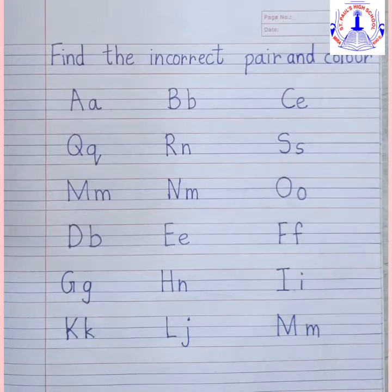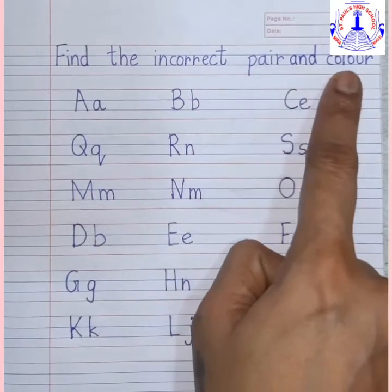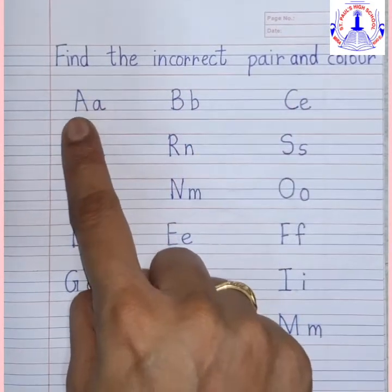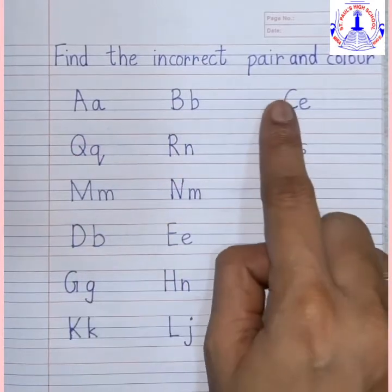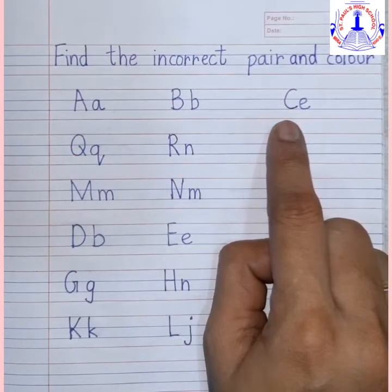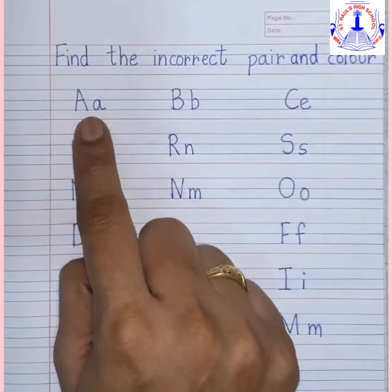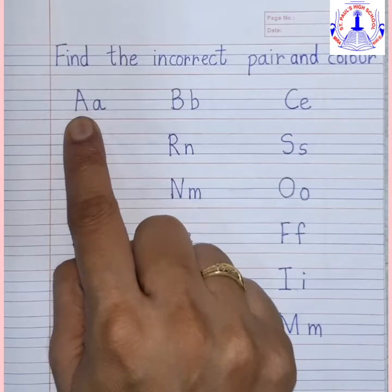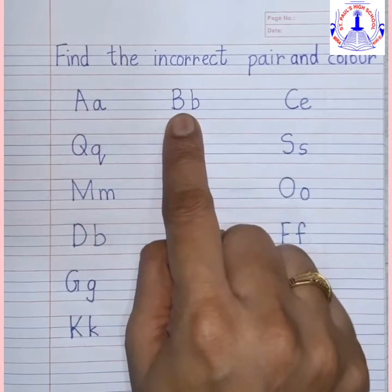So children, we will solve this worksheet: find the incorrect pair and color it. We have to find the incorrect pair in each row and color it. We will go row by row. Now see — capital A, small a, capital B, small b...